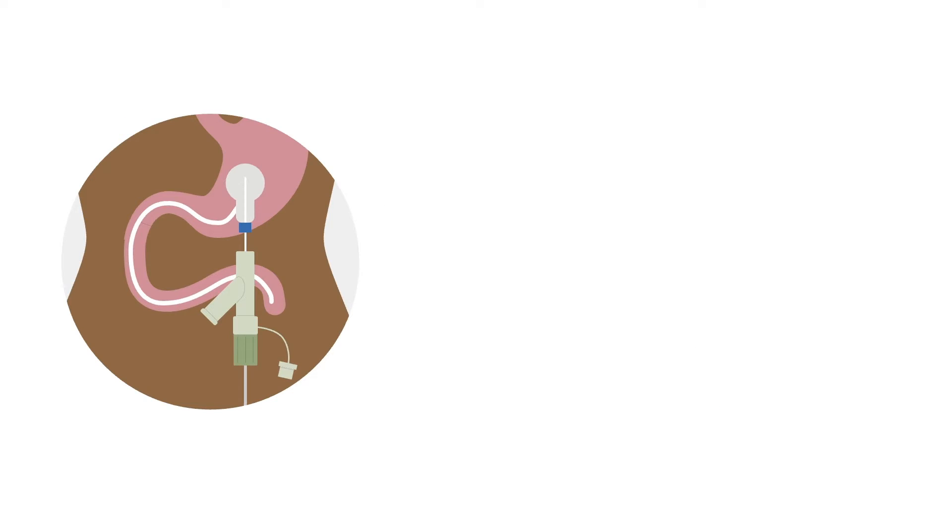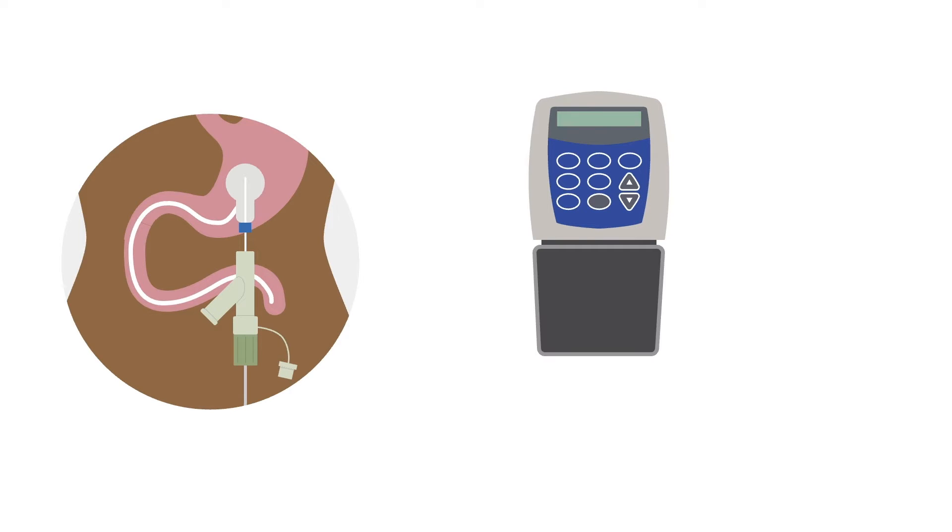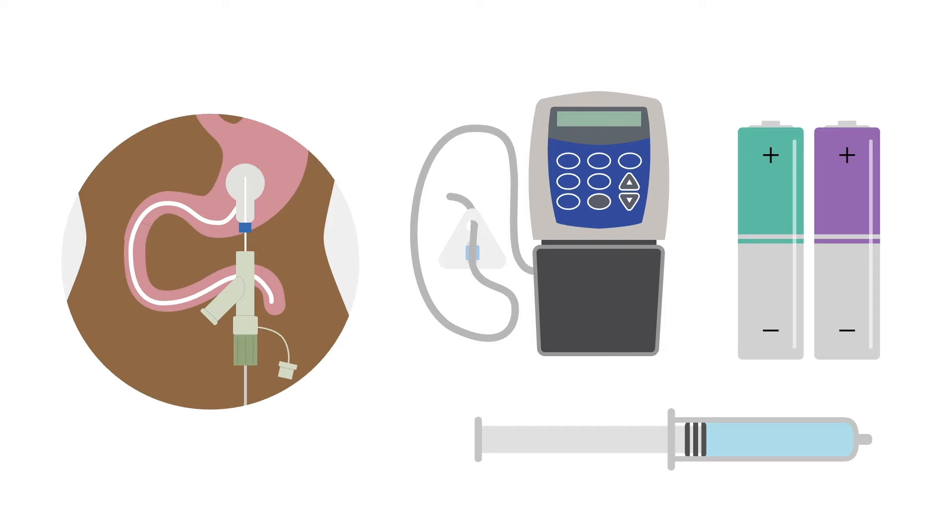Around the time that the tube is placed, the patient will receive their pump, cassettes containing the medication, and a connector to attach the LCIG cassette to the tube. They may also receive batteries for the pump and syringes for flushing the tube with saline.